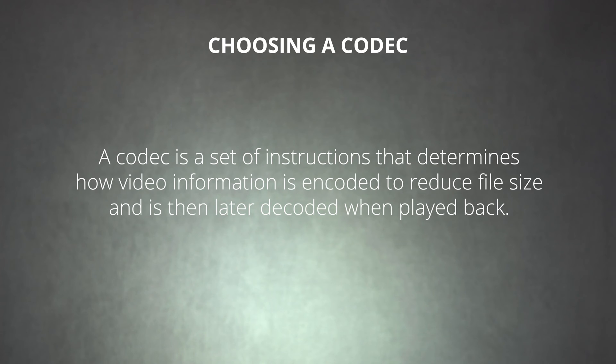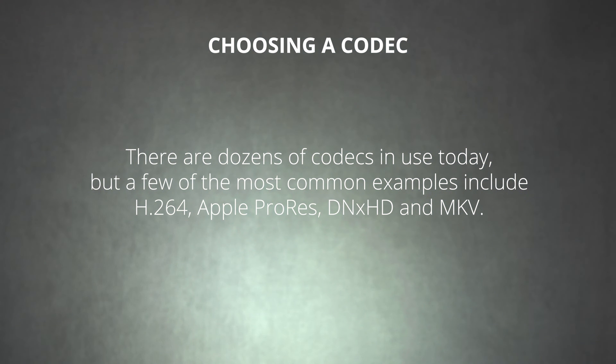Without getting lost in the details, a codec is a set of instructions that determines how video information is encoded to reduce file size and is then later decoded when played back. There are dozens of codecs in use today, but a few of the most common examples include H.264, Apple ProRes, DNxHD, and MKV. Each codec is designed for different purposes and offers different advantages and disadvantages.